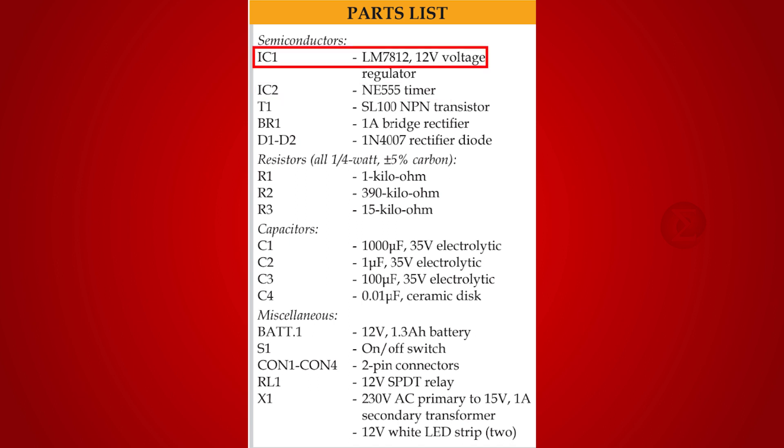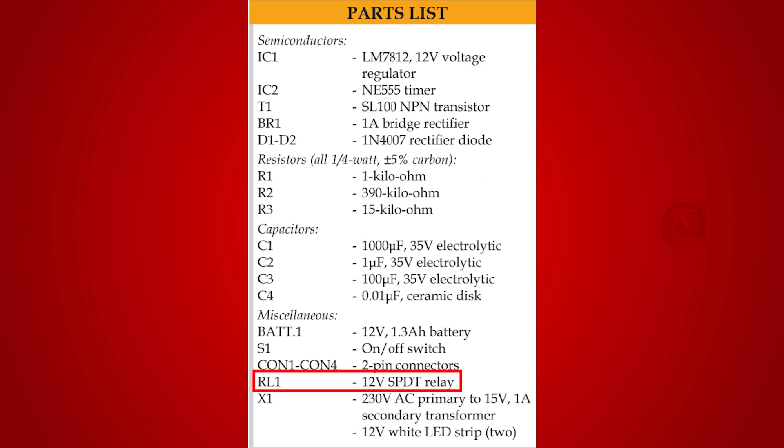A LM7812 voltage regulator IC is used to get a fixed input voltage. A 12V SPDT relay handles the alternate turning on and off of the Alphabits. An on-off switch is used to turn the emergency light on and off.